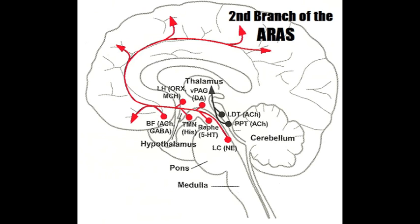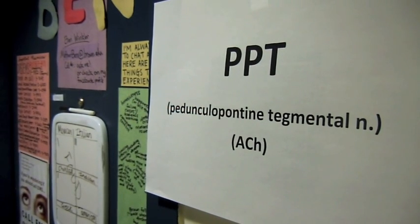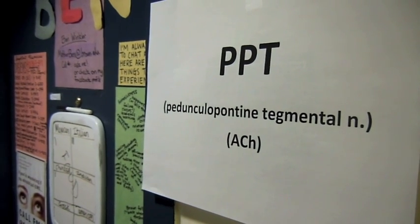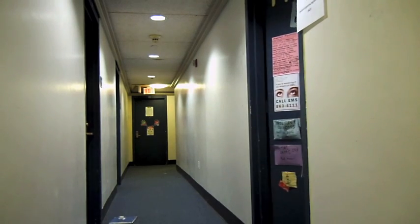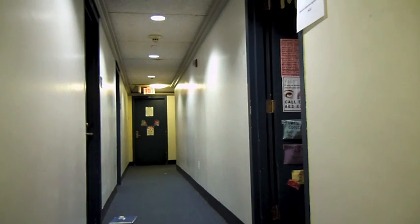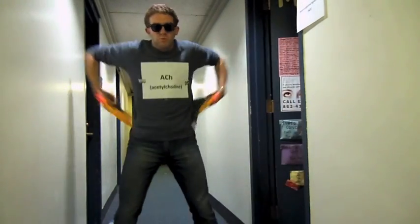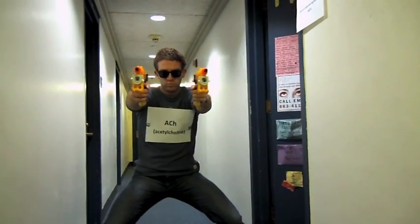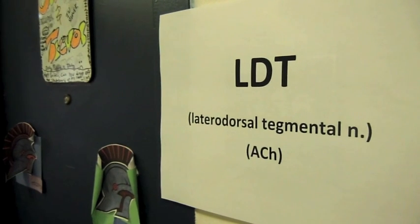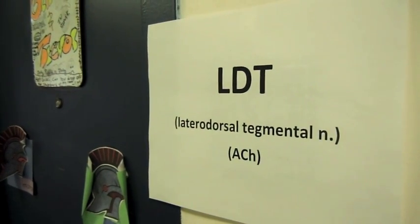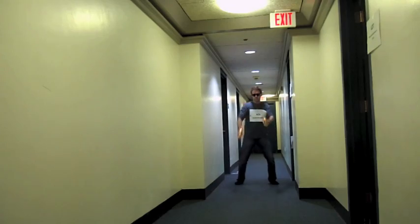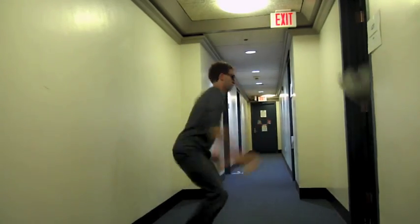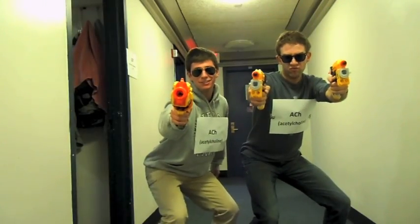Let's take a look at the first branch of the ARAS. The pedunculopontine tegmental nuclei, or PPT, which is located in the midbrain, is cholinergic, meaning it secretes acetylcholine. A close neighbor of the PPT in the midbrain is the laterodorsal tegmental nuclei, or LDT. It also secretes the neurotransmitter acetylcholine.